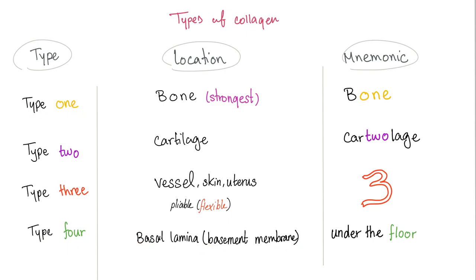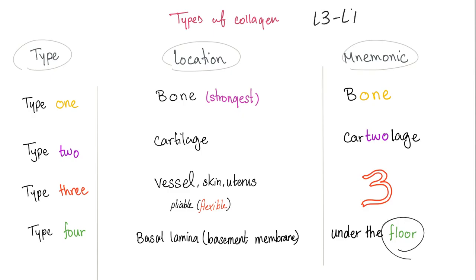Mnemonics: type 1 in bone, type 2 in cartilage, type 3 is flexible — here's a very flexible 3. Type 4 is under the floor, the floor being the basement membrane. Remember L3, L4 — you kick the door, that's the patellar reflex or knee jerk reaction.